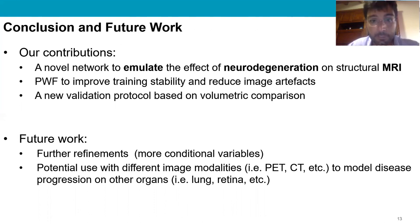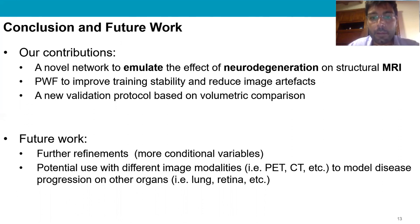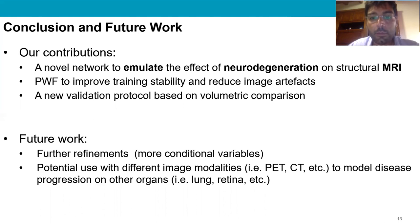This gives us confidence that our proposed solution can be useful in clinical applications to better understand neurodegeneration. Although 4D-DANINET has been designed to model neurodegeneration in MRI, due to its high modularity it can be extended to work with different medical imaging modalities such as PET and CT, and to model degeneration and disease in other organs, for example lung, prostate, and retina.